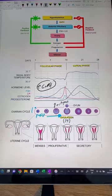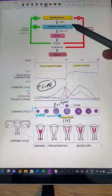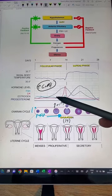Estrogen, as we see, rises here, and it actually has a negative feedback, as we see here, on our anterior pituitary. So that's why we don't see increases of FSH and LH.